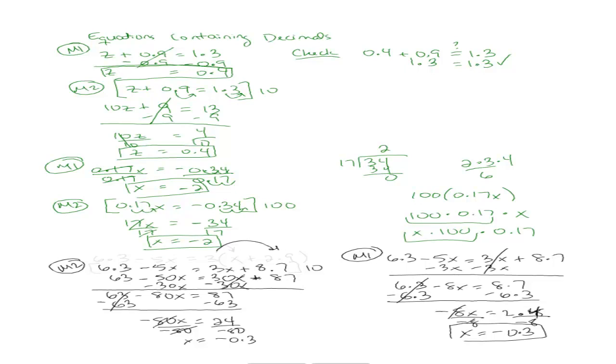Okay. Let's try another one. So let's say we have 6.3 minus 5x equals 2.3 times x plus 2.9. So again, we can do method 1 or method 2. Why don't you go ahead and use whatever method you want, and I'll try method 2 when I do it myself.